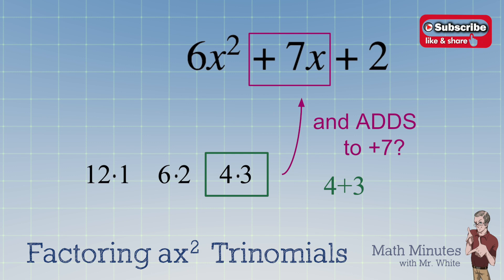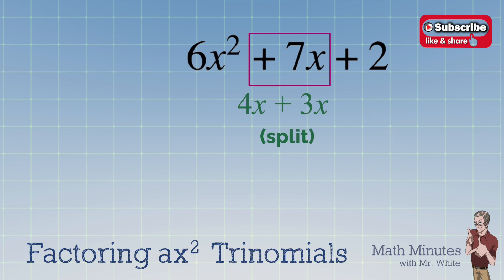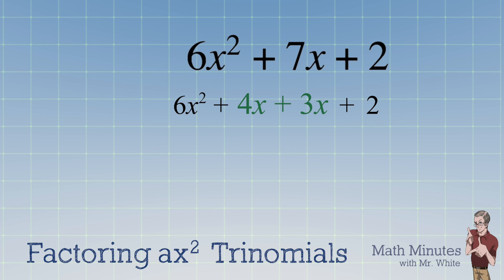4 plus 3 is 7. So let's split the middle term into 4x and 3x, and rewrite the entire polynomial, but now with four terms.